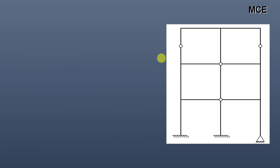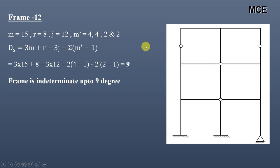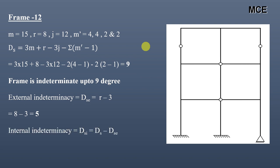For Frame 12, we can see it has a total of 15 members, 8 reactions, 12 joints, and 4 internal hinges. For two of the hinges, the number of members meeting is 4, and for the other two it is 2, so m′ = 4, 4, 2, and 2. The value of ds = 9, so this frame is indeterminate to 9 degrees. External indeterminacy = 8 − 3 = 5. Internal indeterminacy = 9 − 5 = 4.